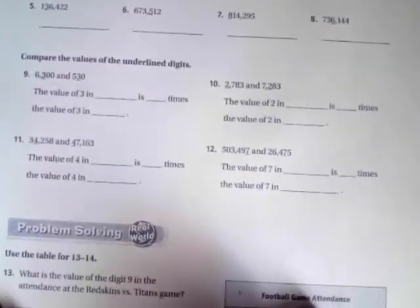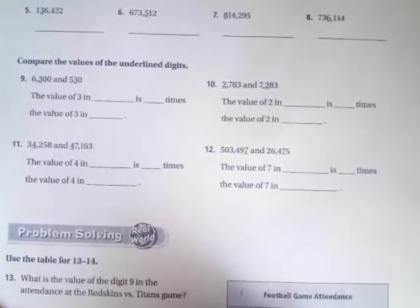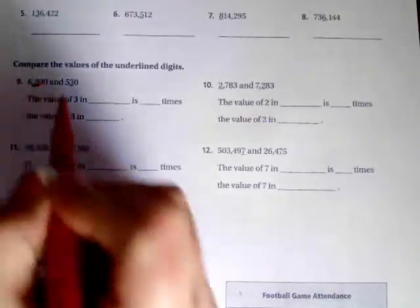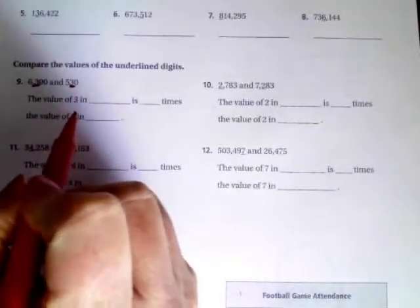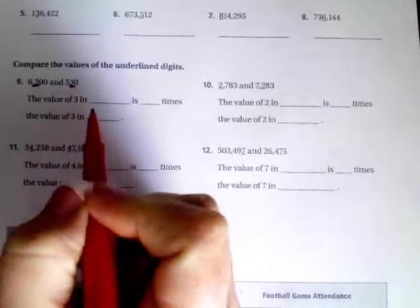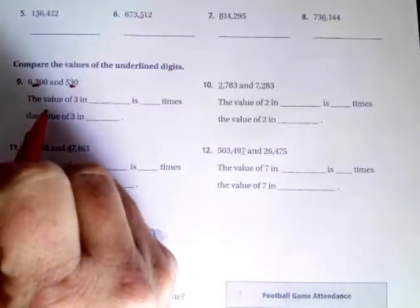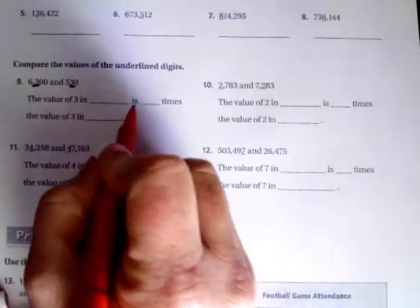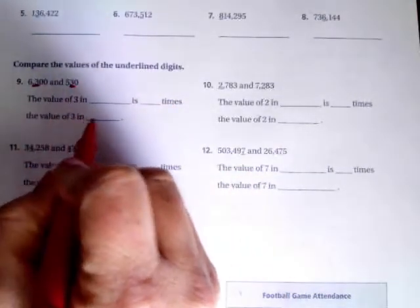We're going to go down to number nine. Number nine wants us to compare the values of the underlined digits. This three is in the hundredths place and this three is in the tens place. So the value of the three in the blank is blank times the value of the three in blank.